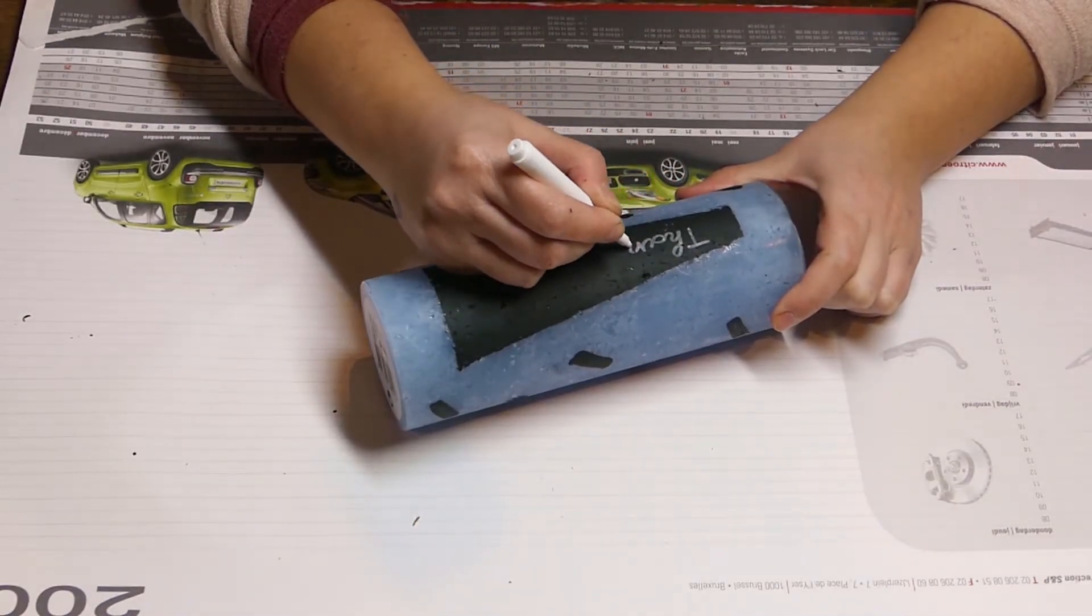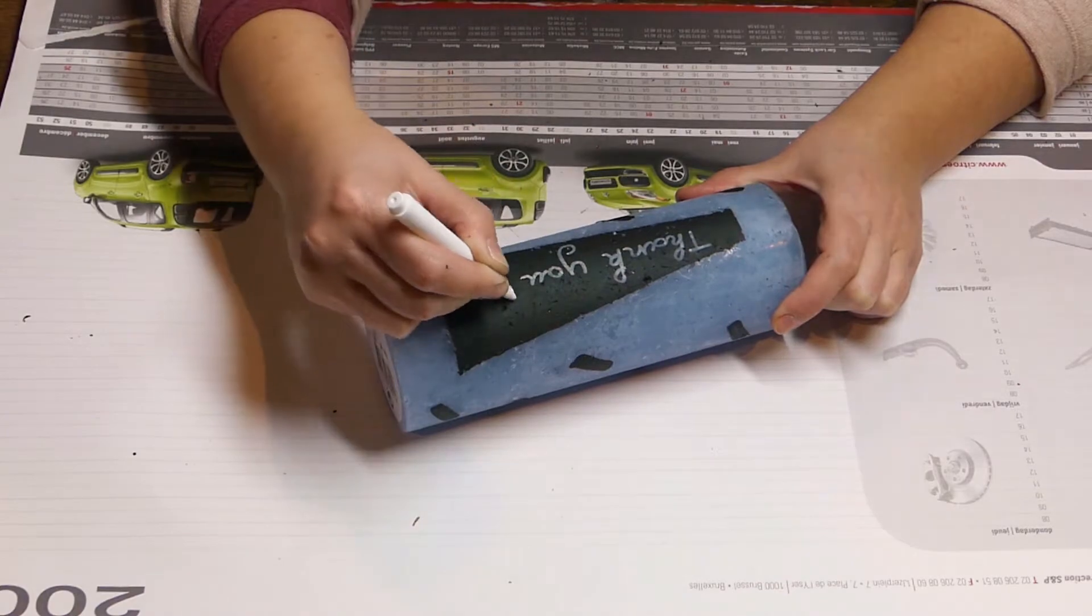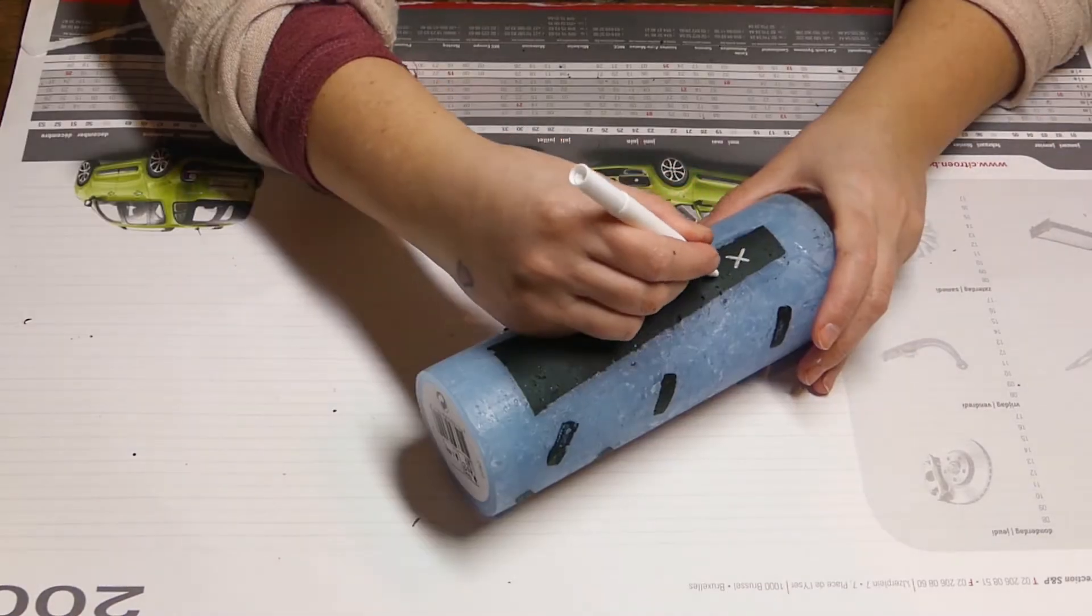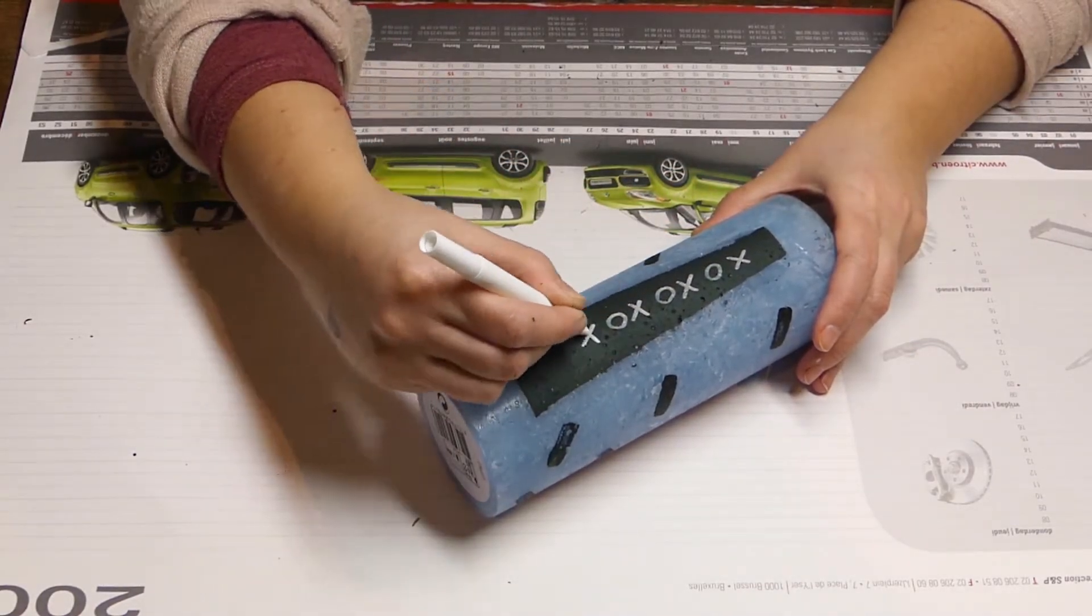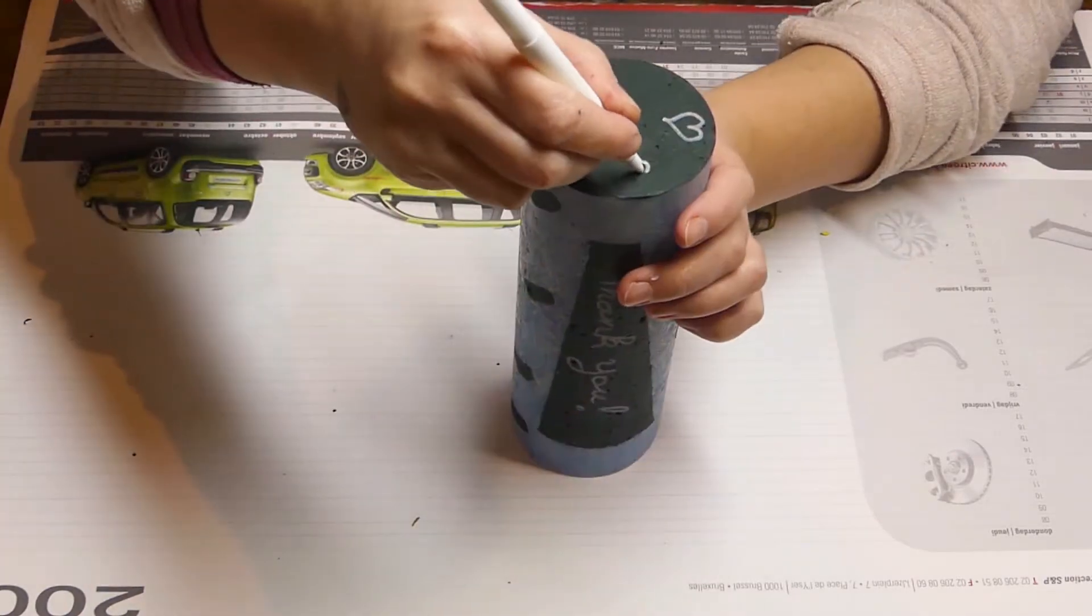Once that's dry, you can use a chalkboard marker to write or draw onto your candle. This is so fun and cute, don't you think so?